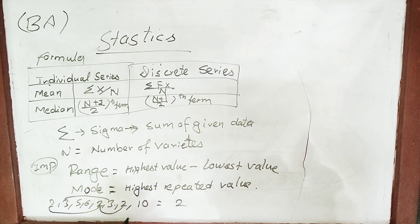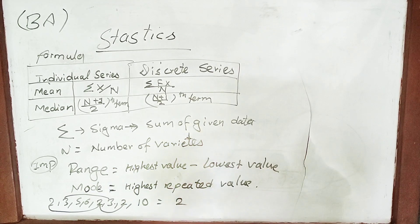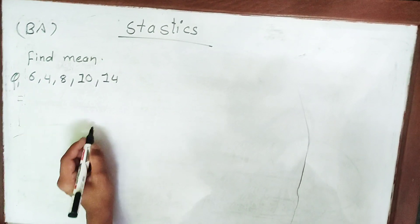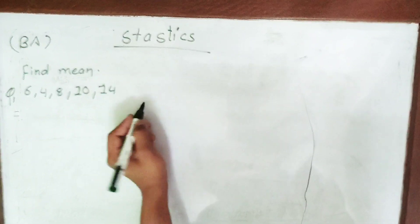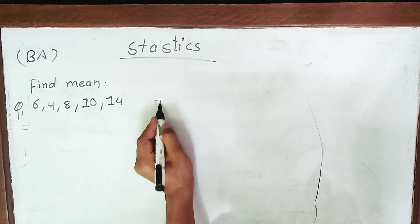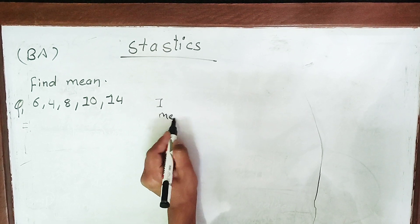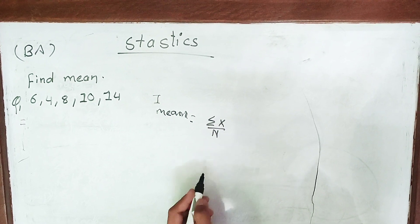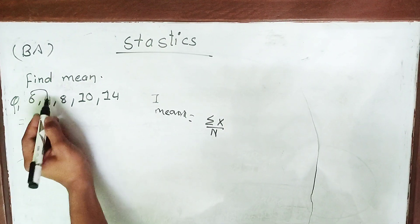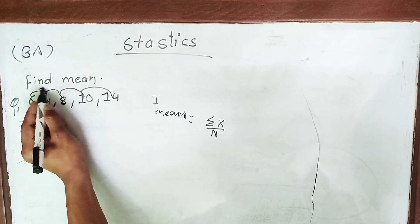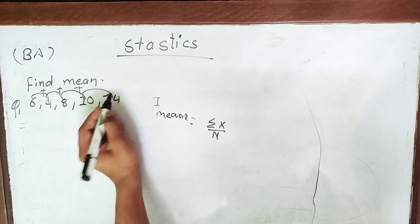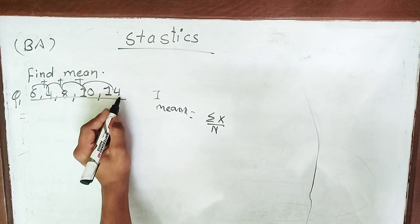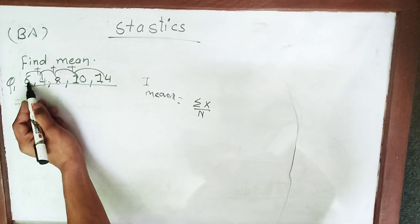Now guys, let's take an example. First, we need to solve this question. How do you find the mean formula? For individual data, the formula is: mean = summation of x divided by n.